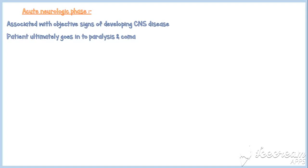The acute neurologic phase is associated with objective signs of developing CNS disease, and the patient ultimately goes into paralysis and coma, followed by death. However, some patients may die immediately after reaching this phase.